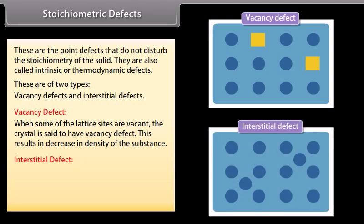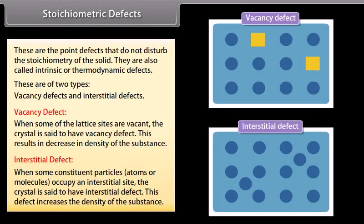Interstitial defect occurs when some constituent particles, atoms or molecules, occupy an interstitial site. The crystal is said to have interstitial defect. This defect increases the density of the substance.